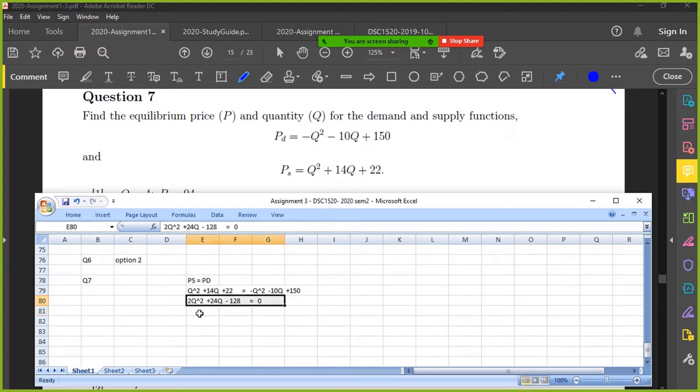Right, there's the formula. Right, simplify. Divide everything by 2. So, Q squared, 12, 64.